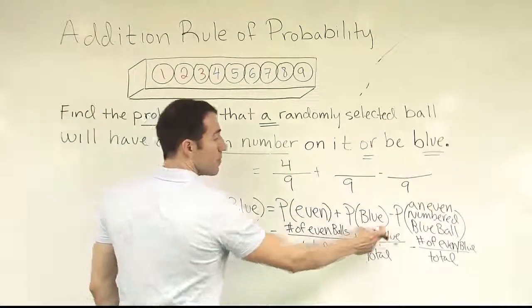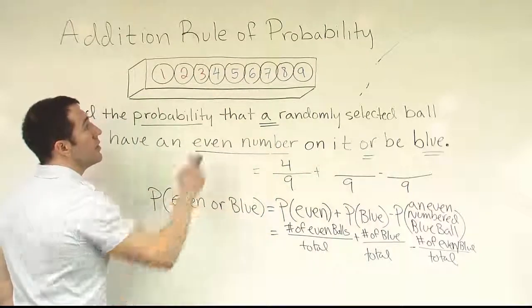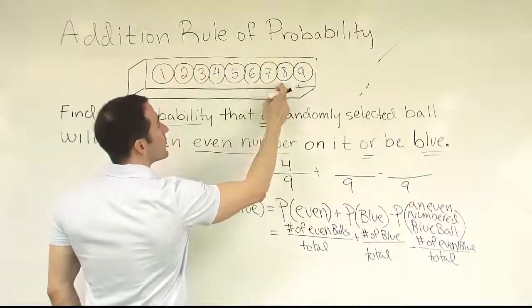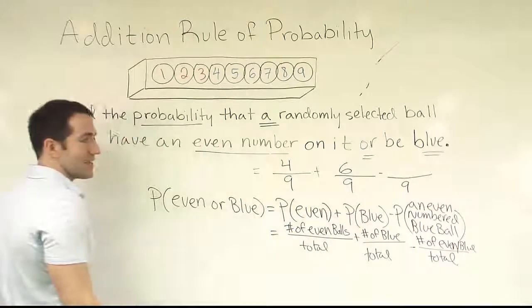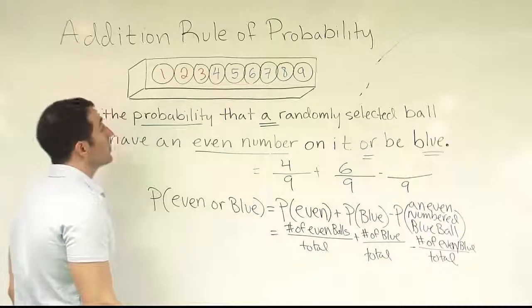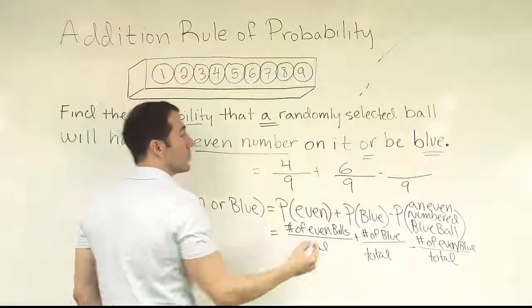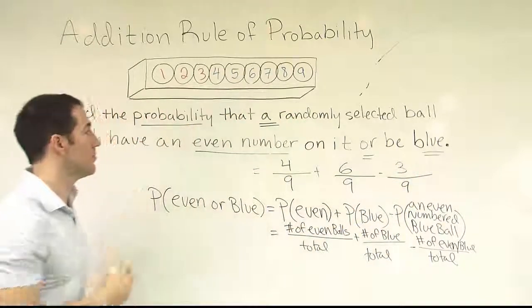Okay, so for the next fraction, I need you to have the number of blue over the total. Well, of these nine balls, how many of them are blue? Well, one, two, three, four, five, six of them. Six were blue. And then lastly, we need to count the number of even-numbered balls that were also blue. Okay, so one, two, three. Three of those guys were both even and blue.